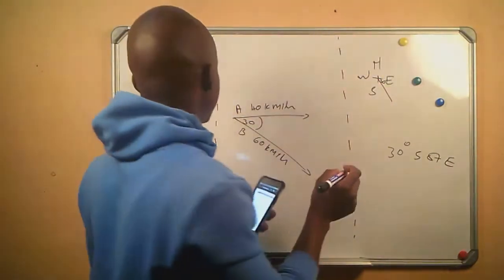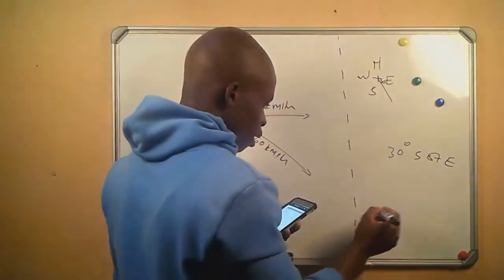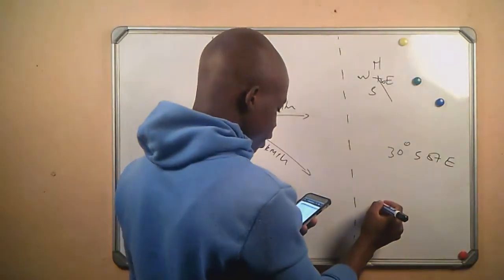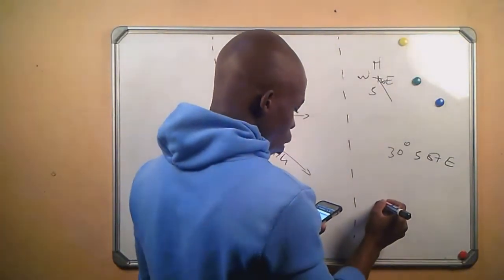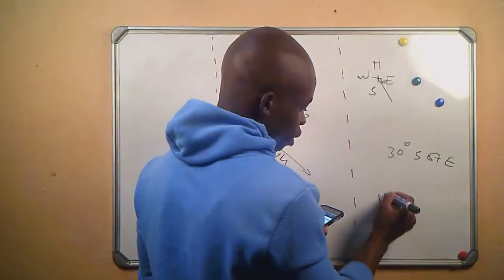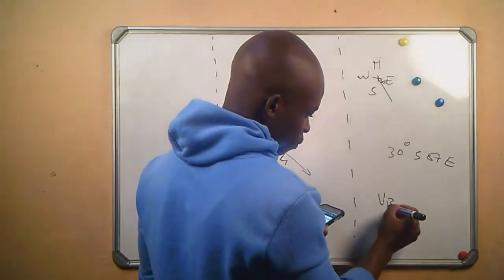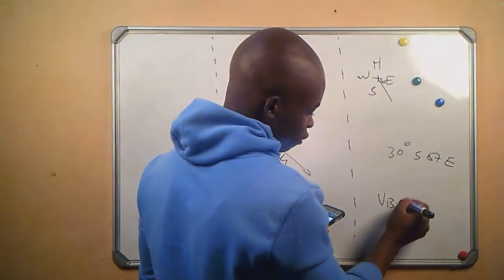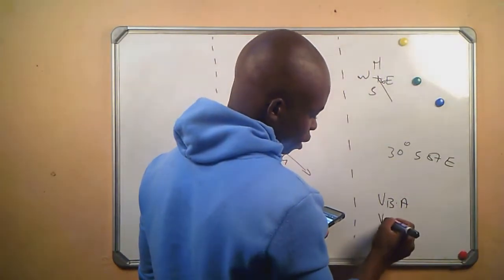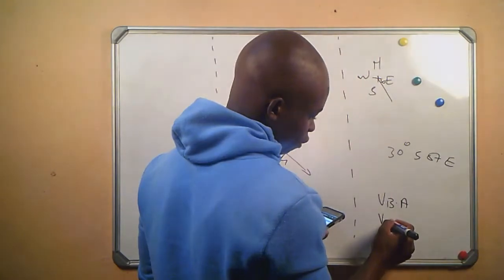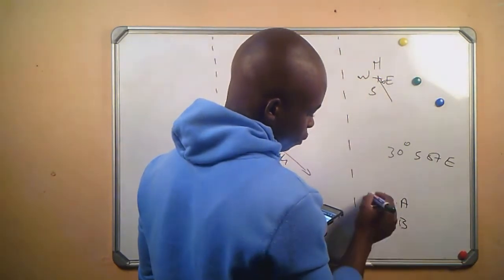The questions say: calculate the velocity of B relative to A — that is question one. And then also calculate the velocity of A relative to B — that is question two.